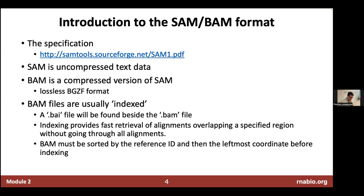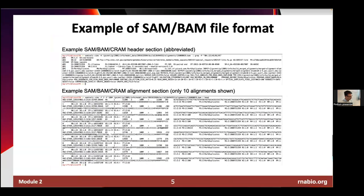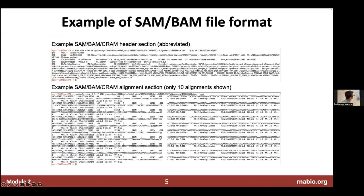There is a specification we link there. SAM/BAM — SAM is just the uncompressed version of the BAM file. BAM files are usually indexed, so you build an index to go along with your BAM file so that it can be read in by things like IGV. It has two parts: a header section that has information about the sample that was aligned and the program that aligned it, and then the alignment section where each row basically has information about a read and how it was aligned.